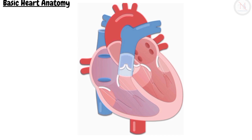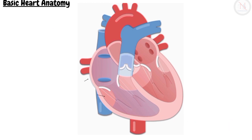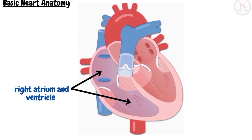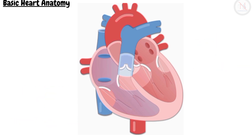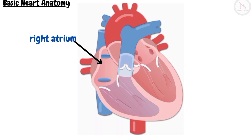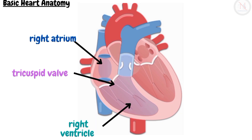In a normal heart there are four chambers with two atria and two ventricles. The right side of the heart — that is, the right atrium and right ventricle — contains deoxygenated blood, whereas the left side of the heart — the left atrium and left ventricle — contains oxygenated blood. The oxygenated blood from the whole body reaches the right atrium through the inferior and superior vena cava, then passes down into the right ventricle through the tricuspid valve.